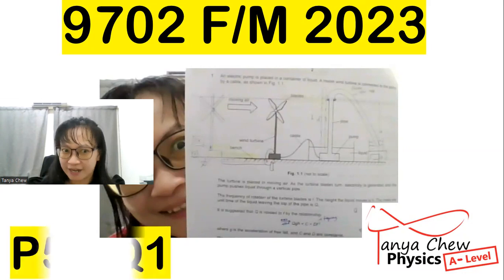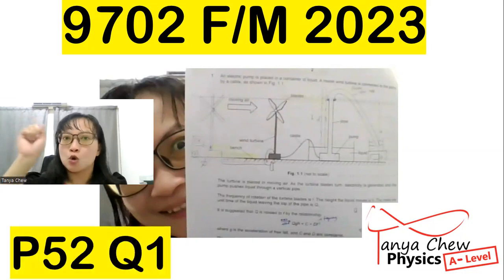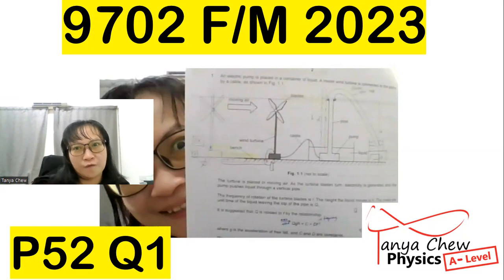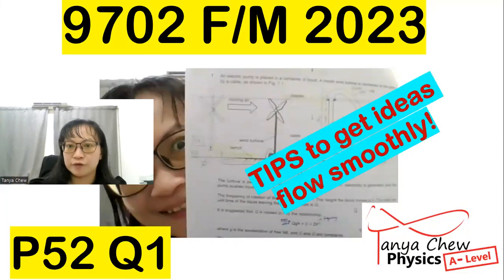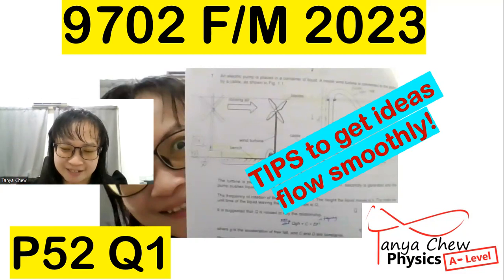And the paper that I'm going to discuss is paper 52, question number one. One of the very time consuming questions to answer. Most students think they couldn't get any idea on how to plan an experiment. So in this video, I am going to give you some tips to get ideas so that your ideas could flow as smoothly as possible when you plan your own experiment. Please stay tuned until the end of the video.